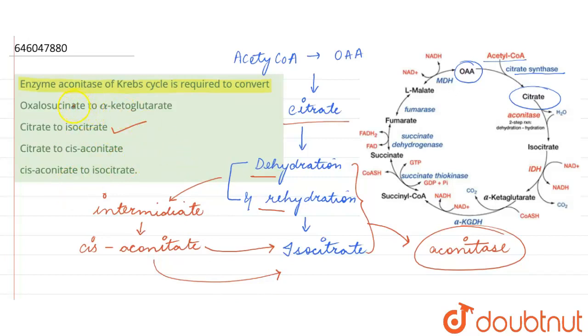Then, first option given here was oxalosuccinate to alpha-ketoglutarate. So this is incorrect, right? Because alpha-ketoglutarate forms succinyl coenzyme and then succinate finally. So this is not the correct products that are forming in the Krebs cycle.